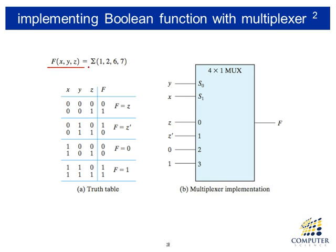Suppose we have a three-variable function which has minterms one, two, six, and seven. Then we can implement this function using a four-by-one multiplexer. The four-by-one multiplexer has two selection inputs, so we assign the most significant variables to the selection signal. Since we have two selection signals, X and Y are connected to those: S1 is the most significant bit so X is connected, and S0 has Y connected.